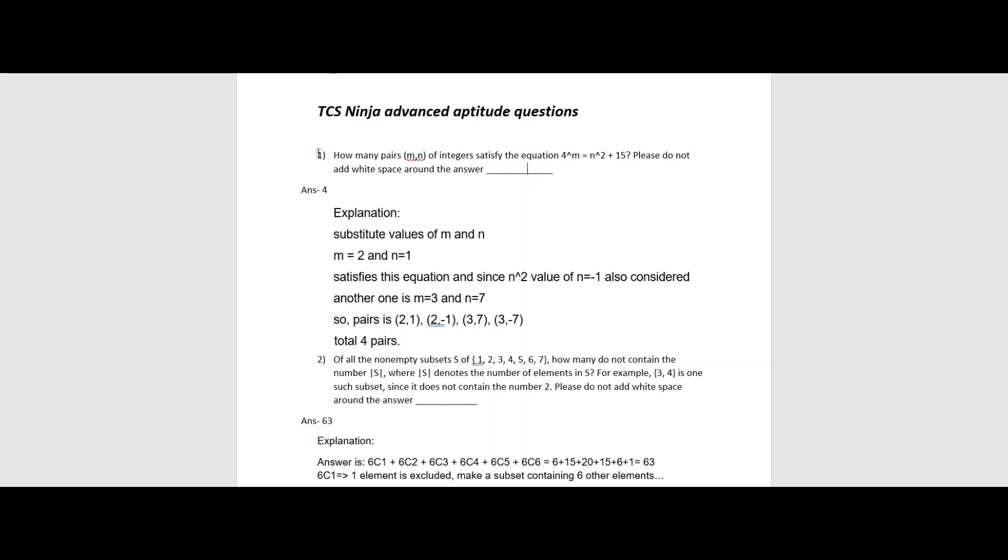So here is the first question today. How many pairs of m and n integers satisfy the equation 4 to the power m equals n squared plus 15? Now this is according to their plan. At least please do not add white space around the answer. You will get this line in every question.